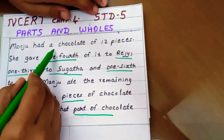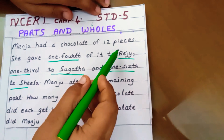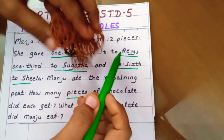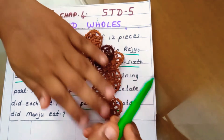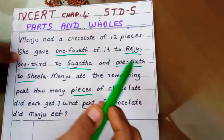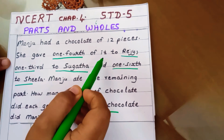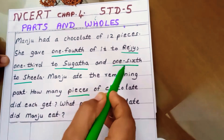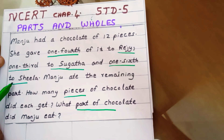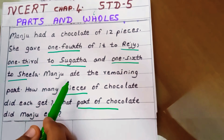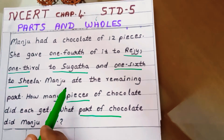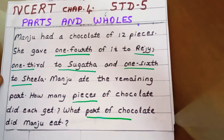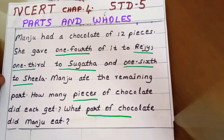The question comes like this: Manju had a chocolate of 12 pieces. She is having a chocolate and it has 12 pieces. She gave 1/4 of it to Reggie, 1/3 to Sujada, and 1/6 to Sheila. Manju ate the remaining part. How many pieces of chocolate did each get — that we are going to find out first.